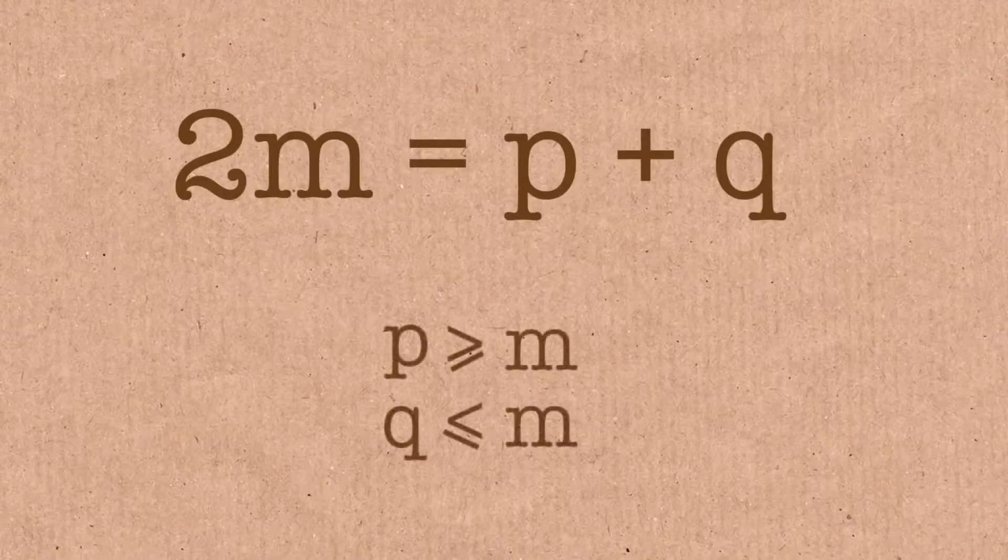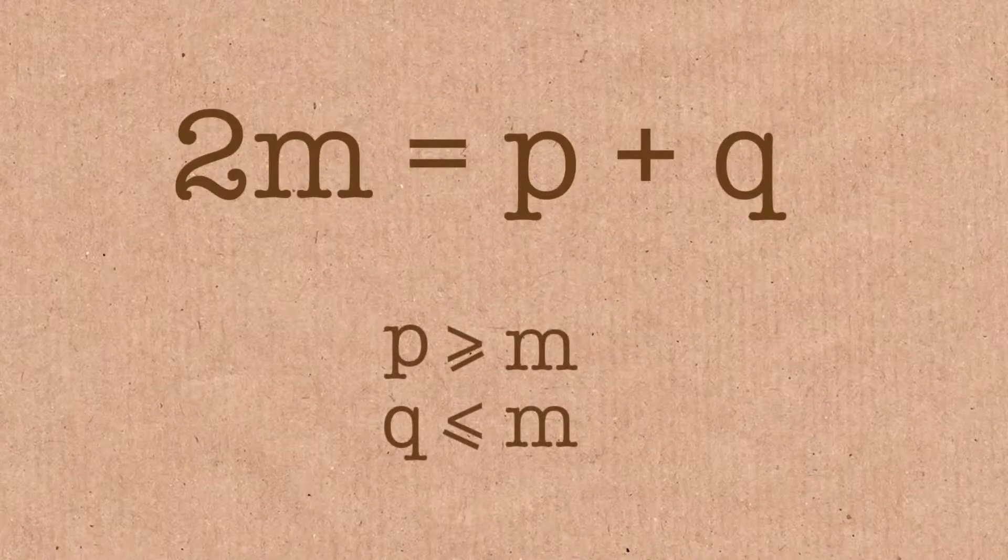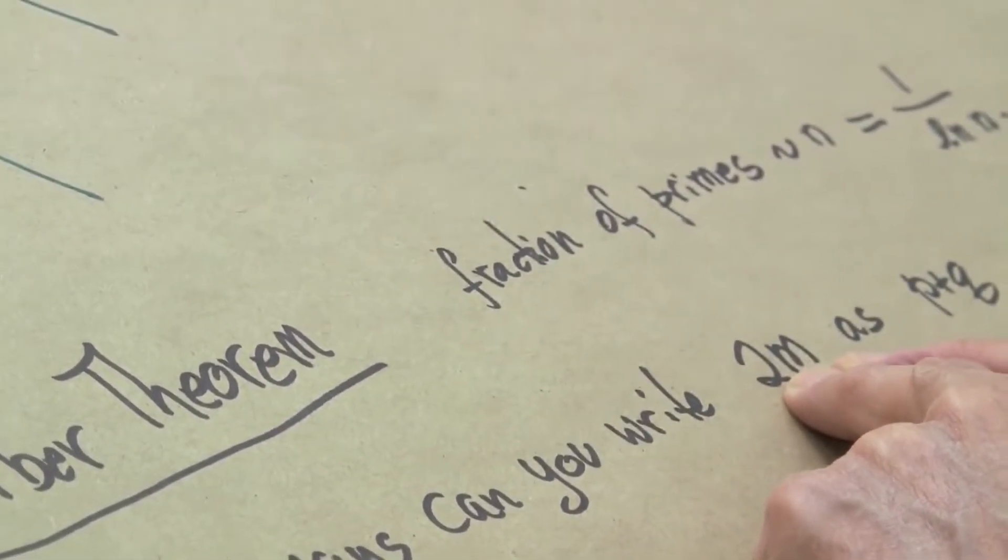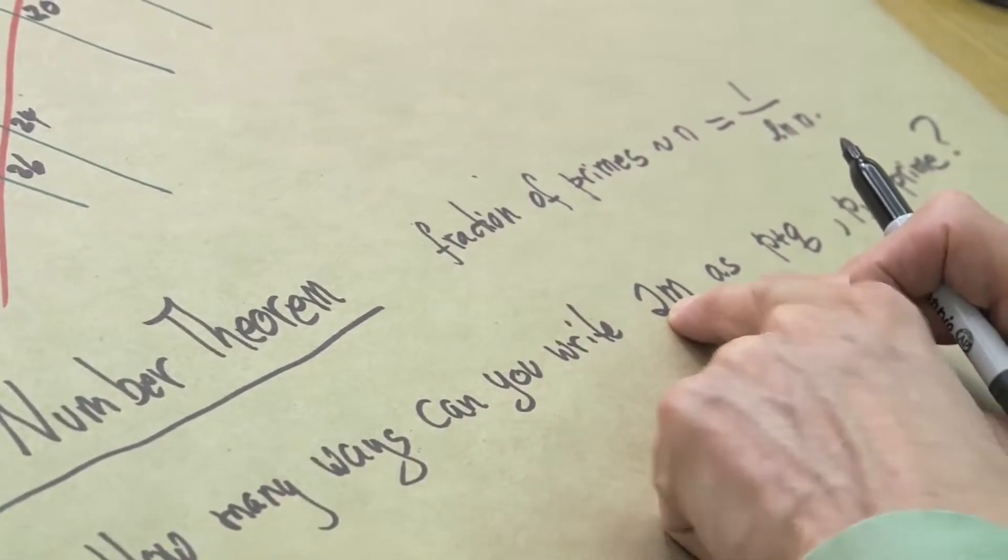So if you write 2m as the sum of p plus q, then one of p and q had better be bigger than or equal, and the other one will be less than or equal to m. If we look at a particular number that's a little bigger than m, between m and 2m, its chance of being prime is 1 over the log. Now logarithm doesn't change very fast. It's a very slowly growing function. So we can estimate it as being the log of m.